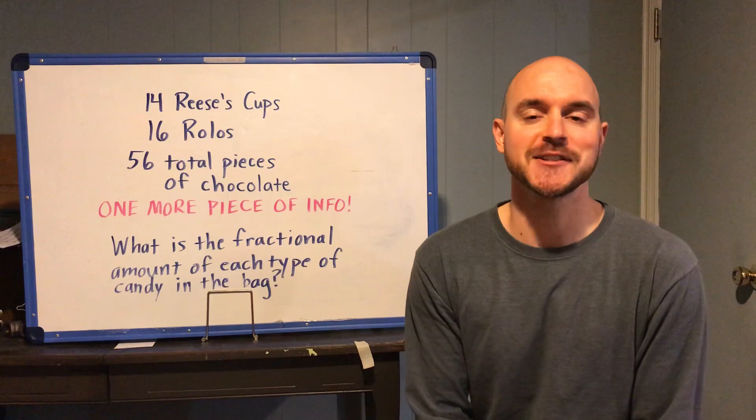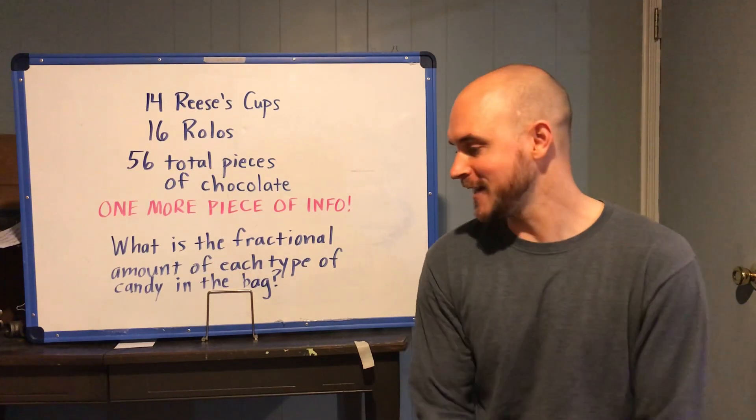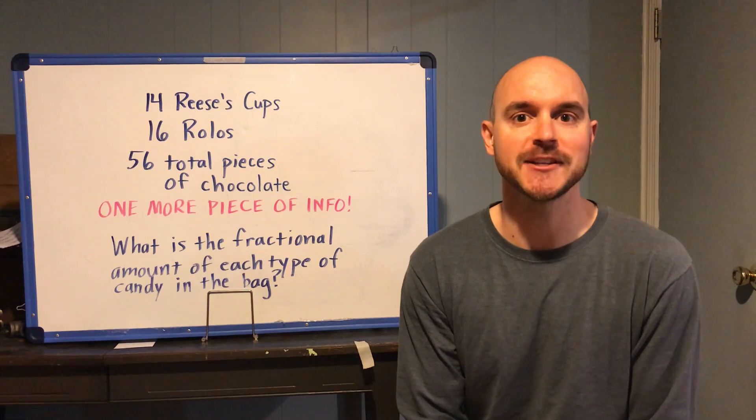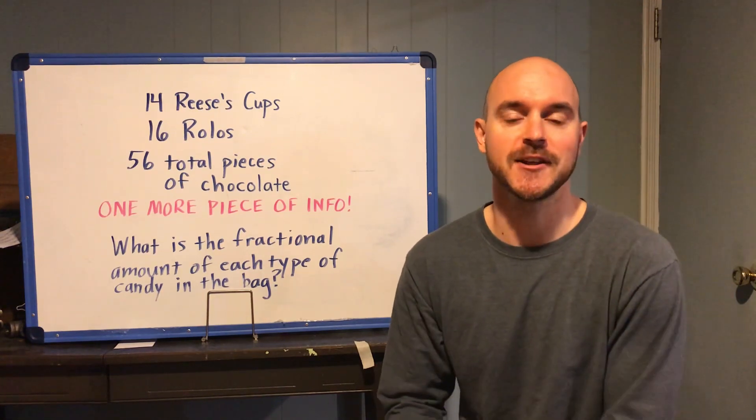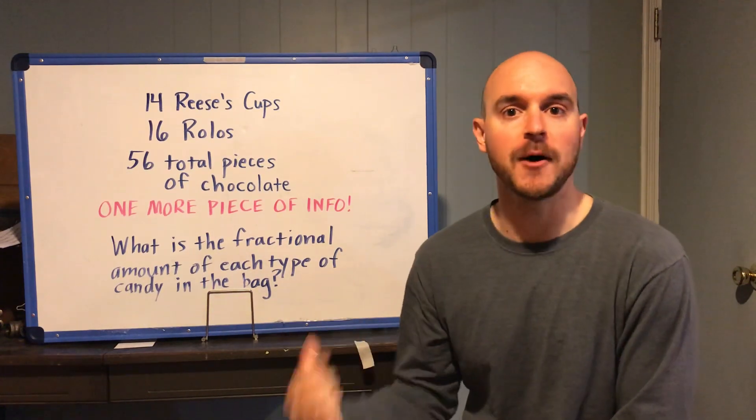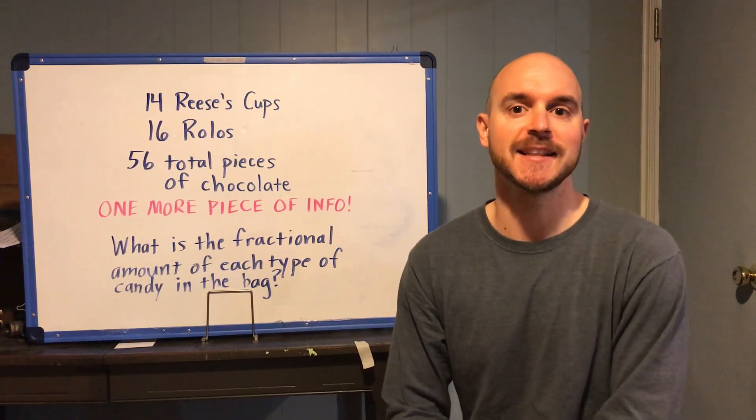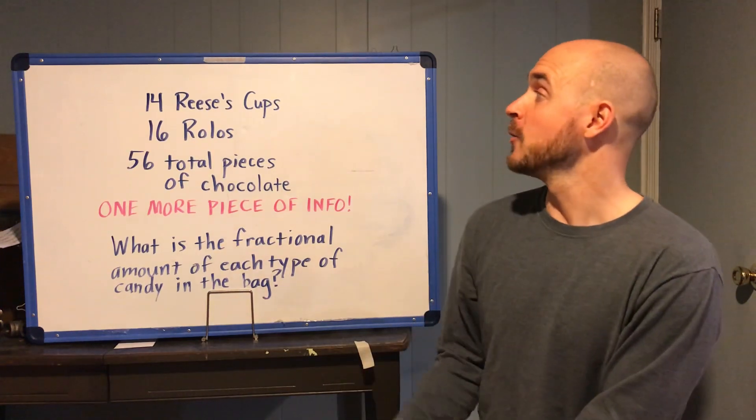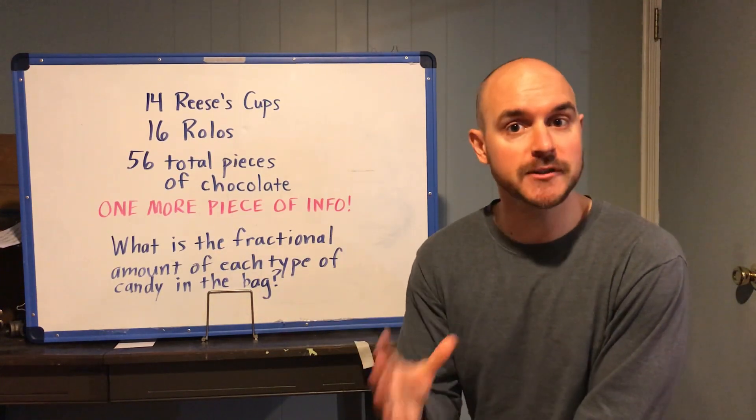You'll see some pictures there but what we learned today is we get some specific information to build on yesterday. Yesterday you should have made an estimate. You think the fractional amount of Hershey Kisses in the bag is this and of Reese's Cups and of Rolos. Well now we know this with certainty.